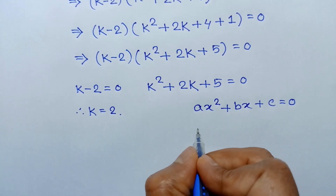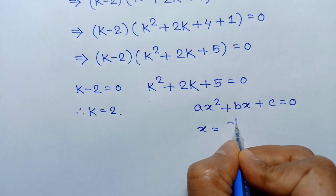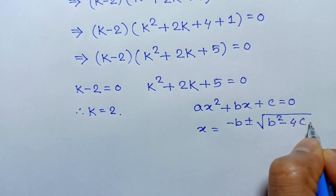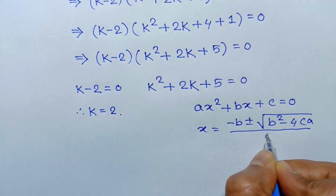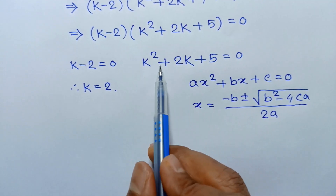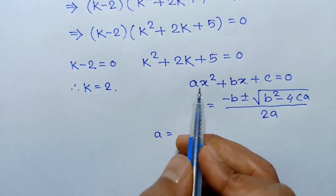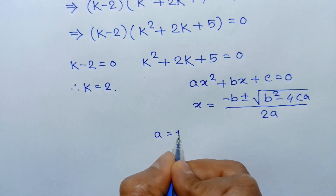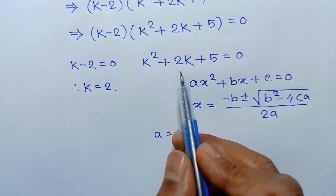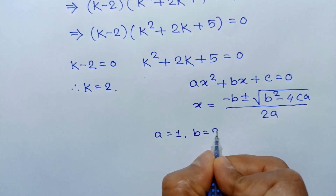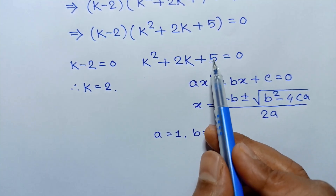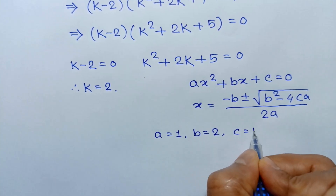The solution of this equation is x equals negative b plus or minus square root of b square minus 4ac over 2a. Comparing with our equation, we can write a equals 1, the coefficient of k square. The coefficient of k is 2, so b equals 2, and the constant term is 5, so c equals 5.